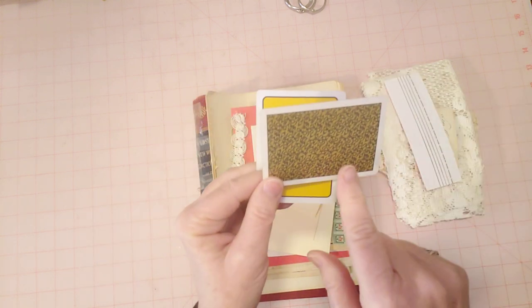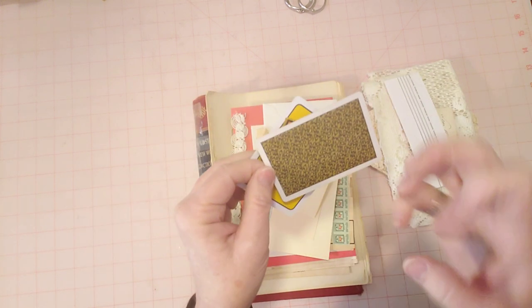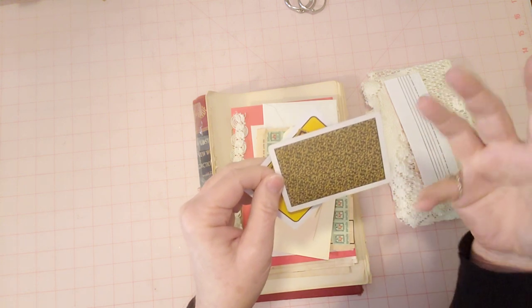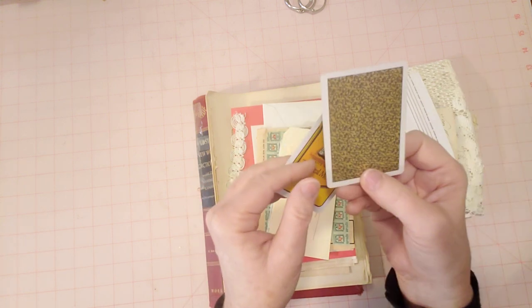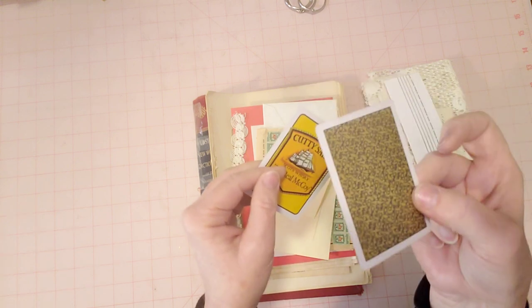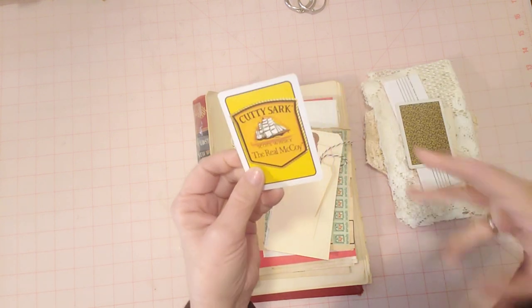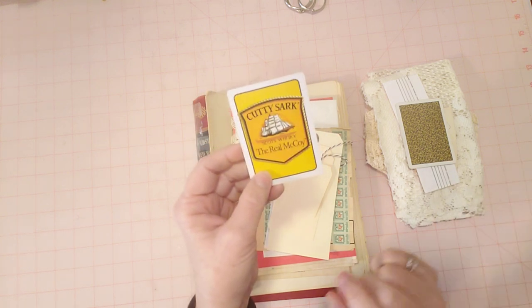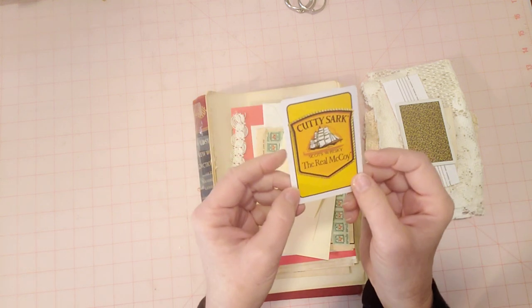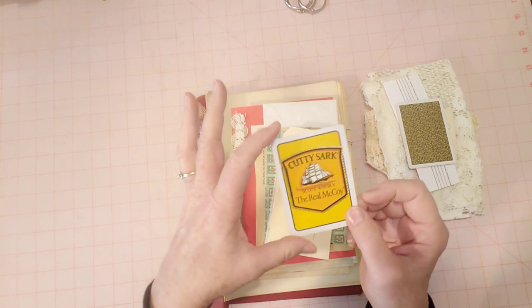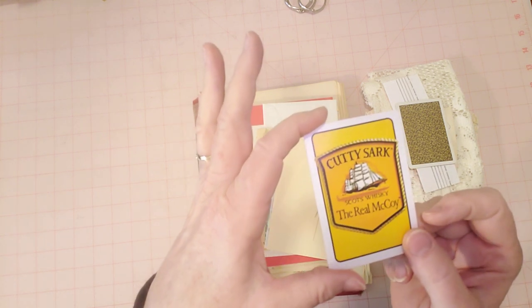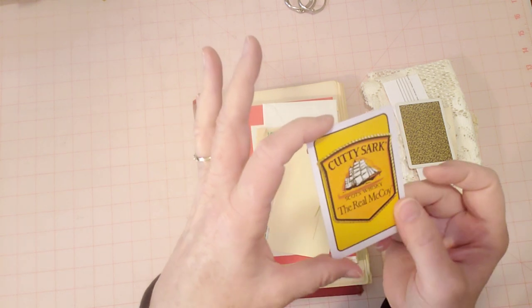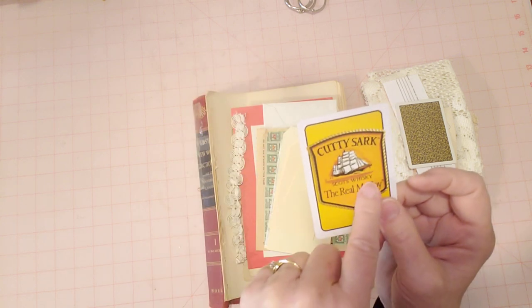This one's actually from Virginia Slims. I don't know if they still make those. That's a cigarette. And it says on the back, you've come a long way, baby. So I thought those were cool. That was a commercial way back whenever those were popular on TV, when you could have cigarette commercials on TV. And then here is a Cutty Sark, The Real McCoy, on this page. Scotch Whisky. And it has a cool picture. All these have cool pictures on them.